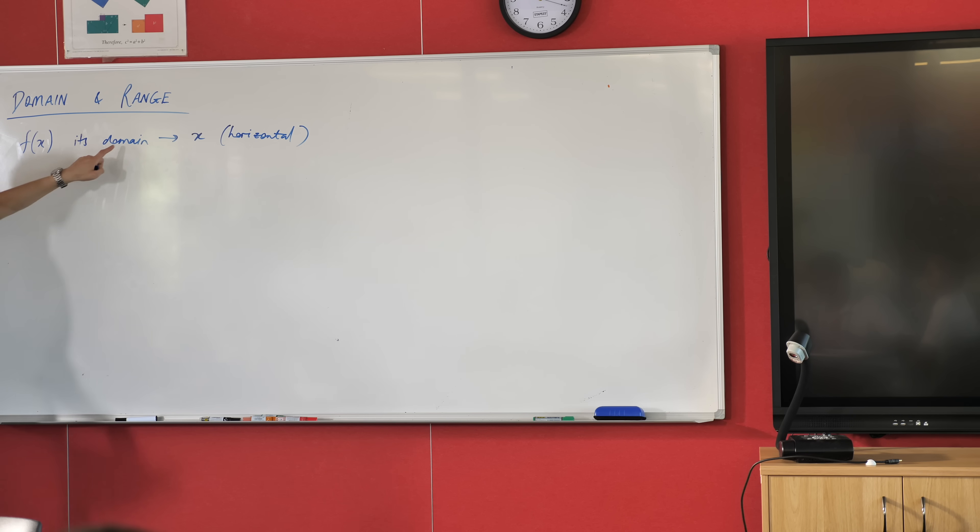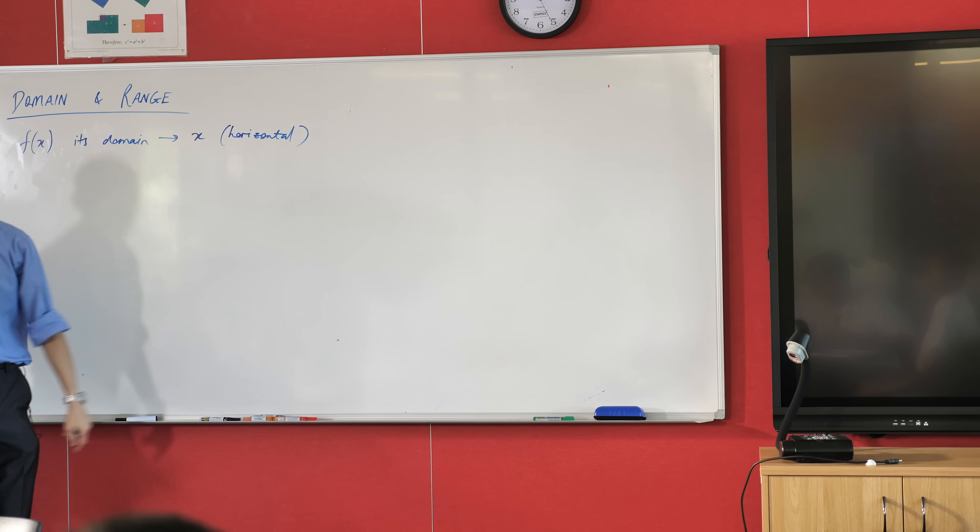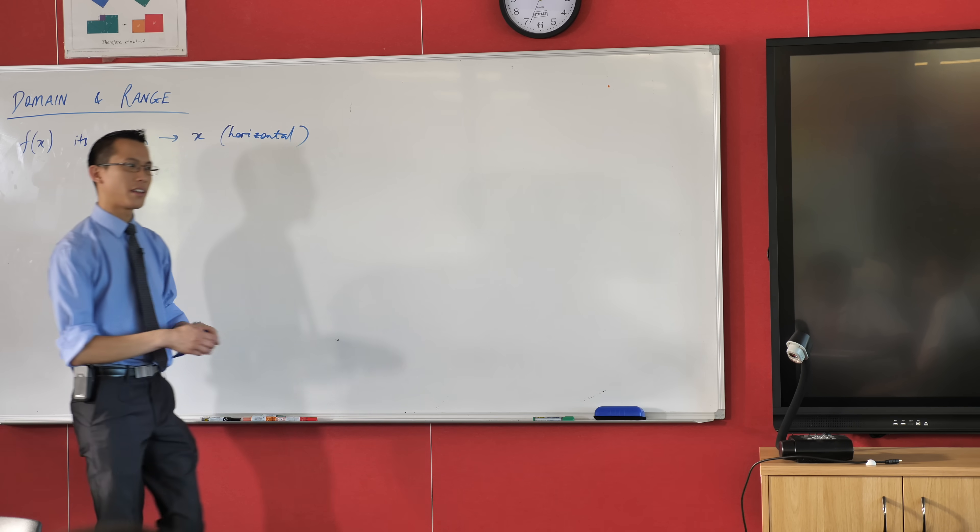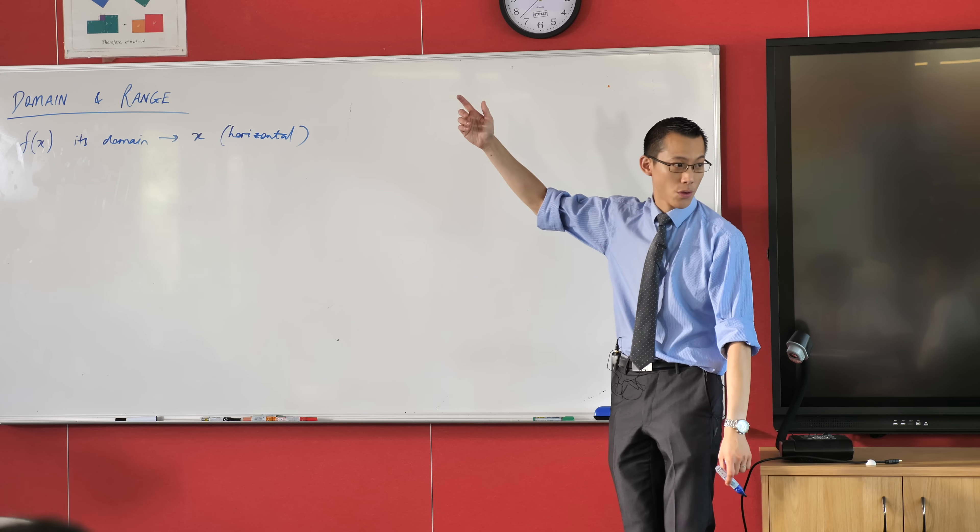So when you have a function, its domain is the x values, the horizontal values that it's allowed to take on. I'm going to give you an example of this in a second. But these are the things you can put into your heading, the coordinates are the x coordinates, the axis is the horizontal axis, and what we call it, the values where the function exists. So this is your third row on your table. We call that domain.